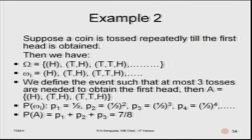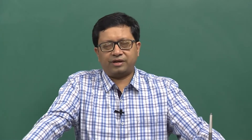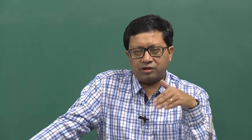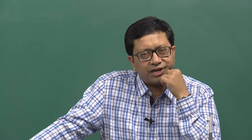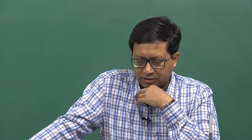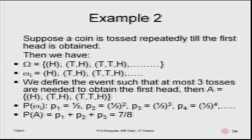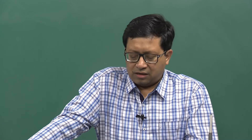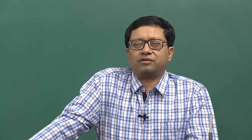A coin is tossed repeatedly until the first head is obtained. The sample space includes: H (head on first toss), TH (head on second), TTH, TTTH, and so on — potentially infinite. The corresponding probabilities are 1/2, 1/4, 1/8, 1/16, and so on. For the event that at most three tosses are needed, the sample points are H, TH, TTH, with probabilities 1/2, 1/4, 1/8. The total probability comes out to be 7/8.